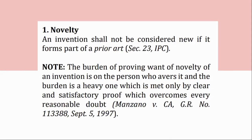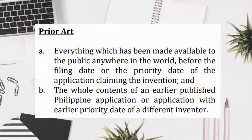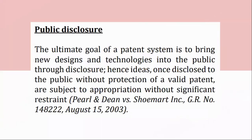Prior art: (A) everything which has been made available to the public anywhere in the world, before the filing date or the priority date of the application claiming the invention; (B) the whole contents of an earlier published Philippine application or application with earlier priority date of a different inventor. The ultimate goal of a patent system is to bring new designs and technologies into the public through disclosure. Hence, ideas once disclosed to the public without protection of a valid patent are subject to appropriation without significant restraint. Pearl and Dean v. Schumart, GR No. 148222, August 15, 2003.